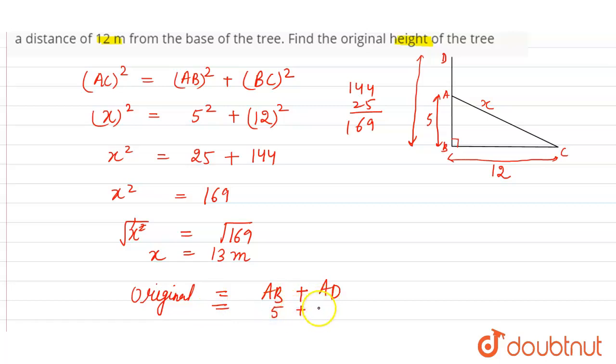And AD we have found is 13. So the original height of the tree is 13 plus 5, that is 18 meter, and this is the required answer.